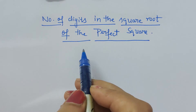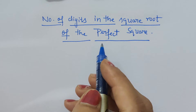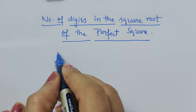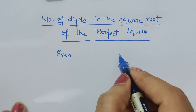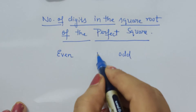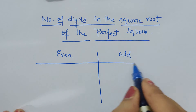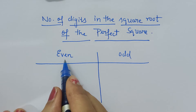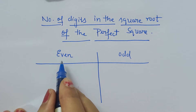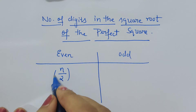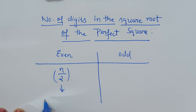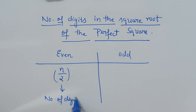Calculating the number of digits in the square root of a perfect square is very easy. We just have to check if the number of digits in the perfect square is even or odd. In case the number of digits is even, we simply divide that number by 2, and whatever the result is, that will be the number of digits in its square root.